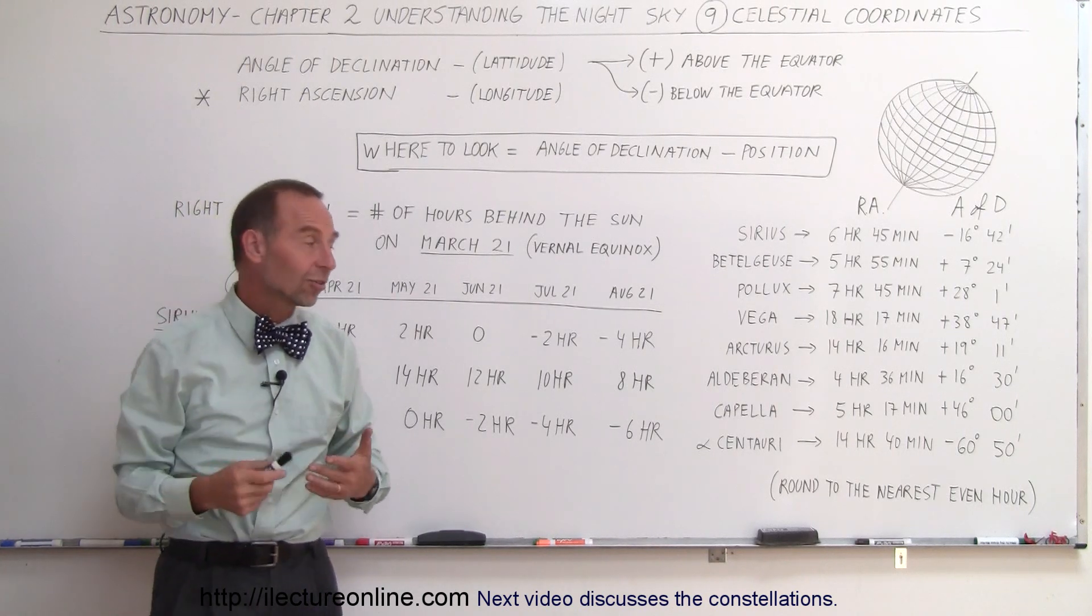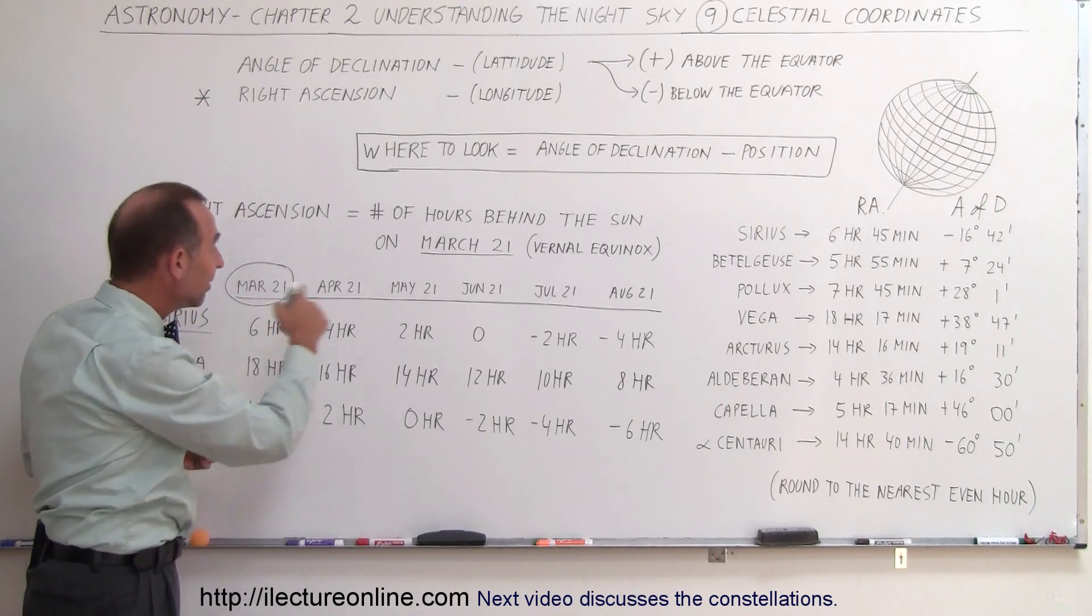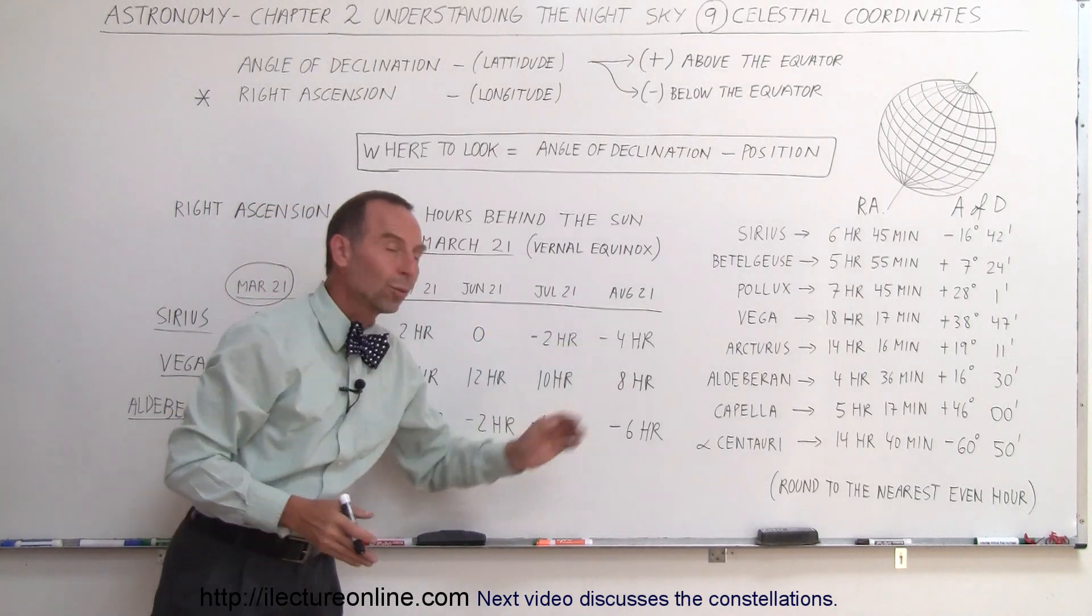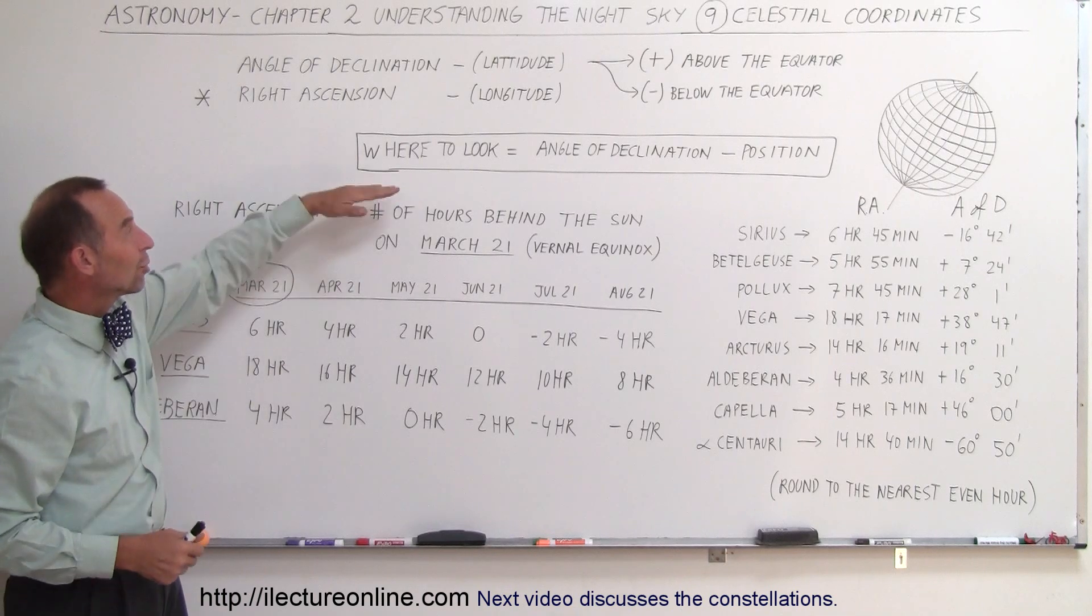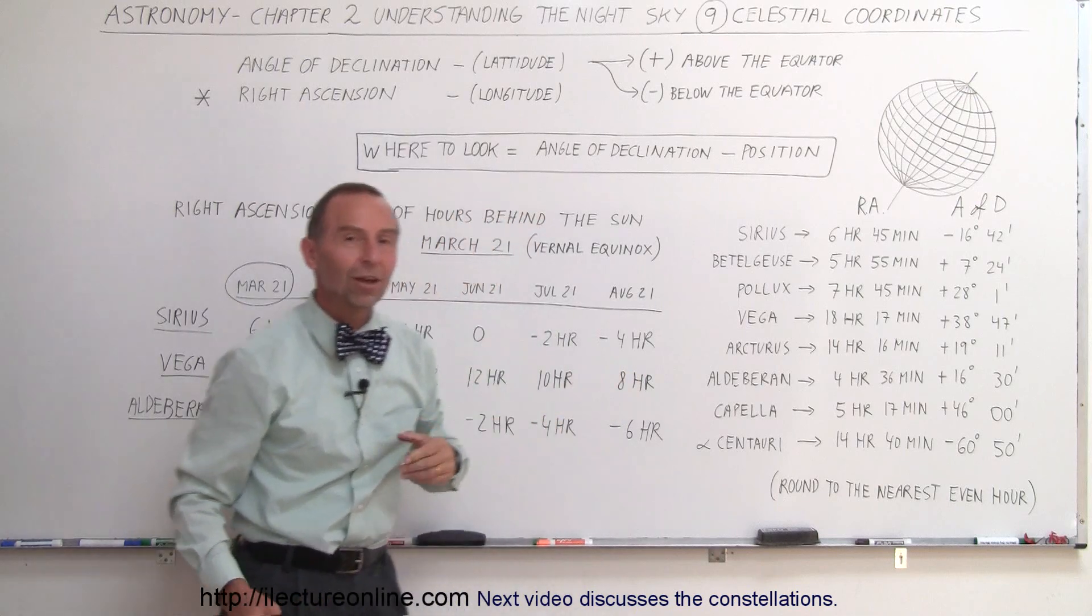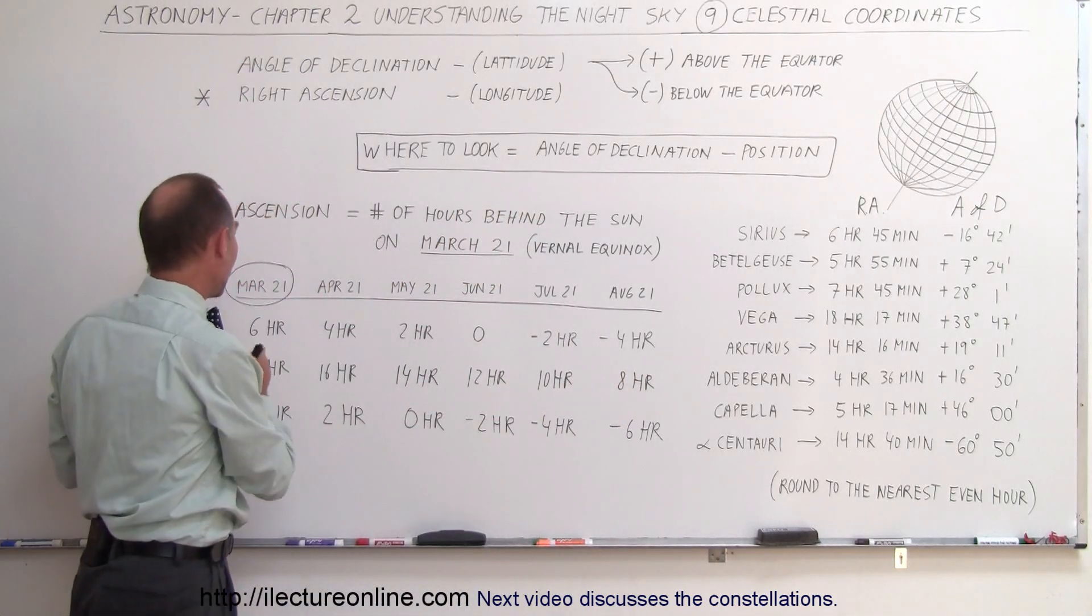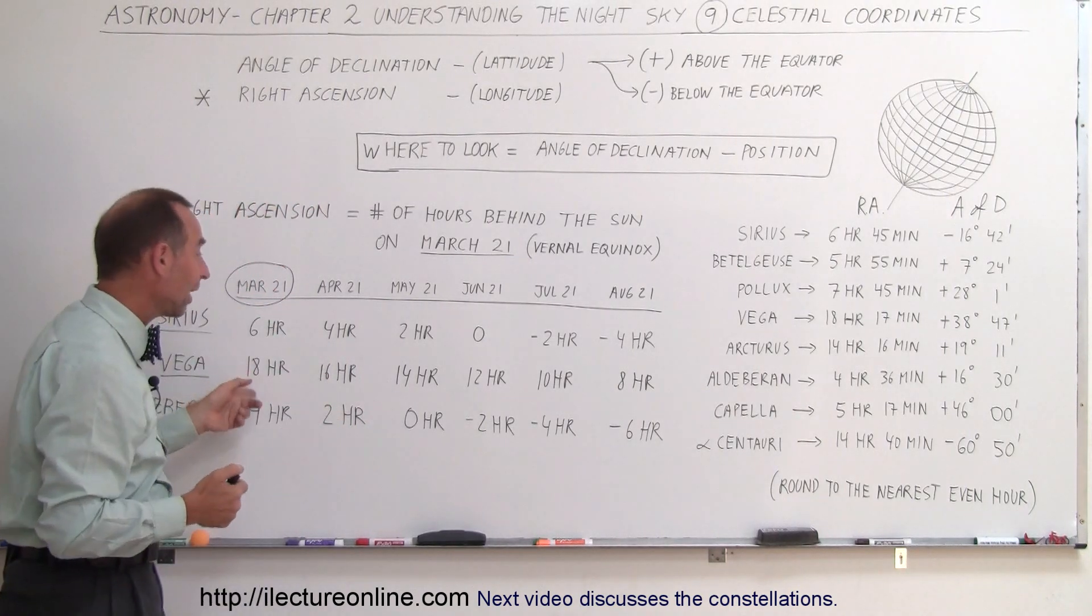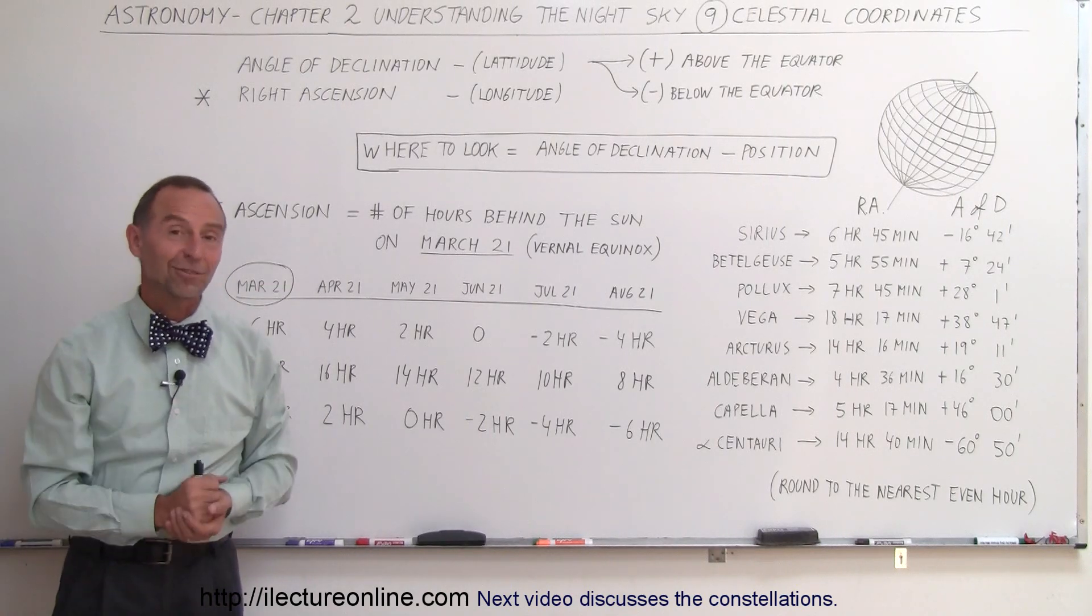So that's how you find stars and constellations, using the right ascension. So you may need to make a little table like that, realize where it is on March 21st, and extrapolate it out to where we are today, whatever the month is that you want to be looking at it. And of course, at that point, you combine where to look, using the angle of declination minus the position on the Earth that you're at, to see where on the meridian you need to look, and secondly, what time of the night you need to look at the star, or the constellation, depending upon where it's at relative to the Sun, and you start from March 21st for the right ascension. And that's how we do that.